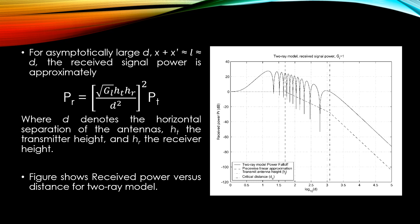For asymptotically large d, x plus h', which is approximately equal to L, which is approximately equal to d, the received signal power is approximately PR equal to √(GL ht hr upon d²)² Pt, where d denotes the horizontal separation of the antennas, ht the transmitter height, and hr the receiver height. The figure shows the received power versus distance for the 2-ray model.